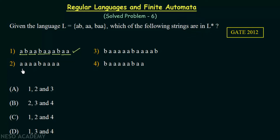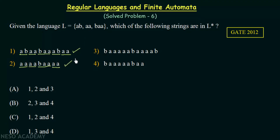Now let us come to option number 2. We have AA in the beginning, which can be formed because we have AA in the language. Then again we have AA, which can also be formed. Then we have BAA, which is also in the language. And finally we have AA, which is also there. So option number 2 can also be formed and this string is in L closure.